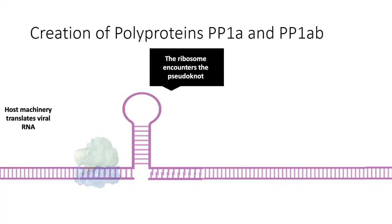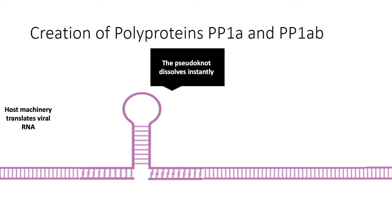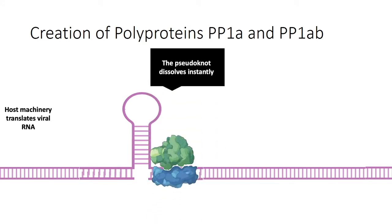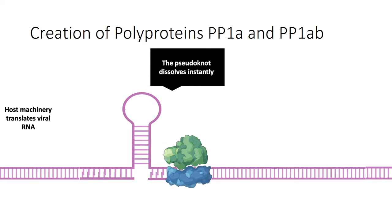In one case, the ribosome is able to melt the pseudoknot and it can continue translation smoothly. This results in polyprotein 1a.